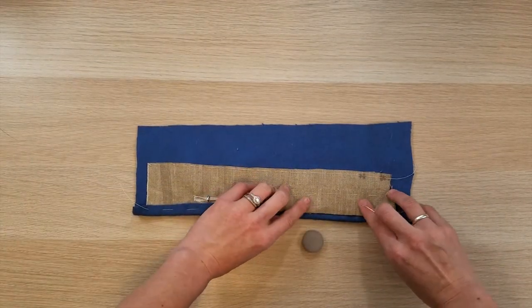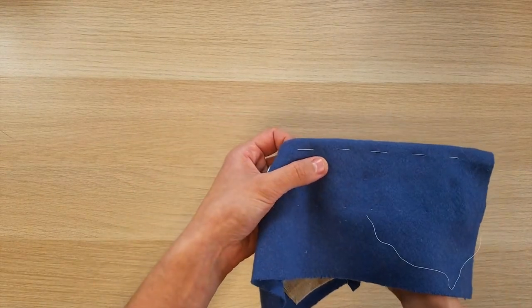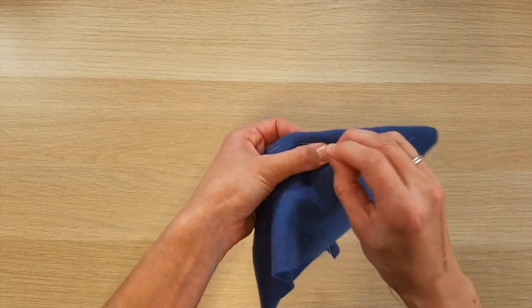For cloth buttons, mark the center point where the button should be attached and begin by pulling your thread up through the back of the fabric at that point.